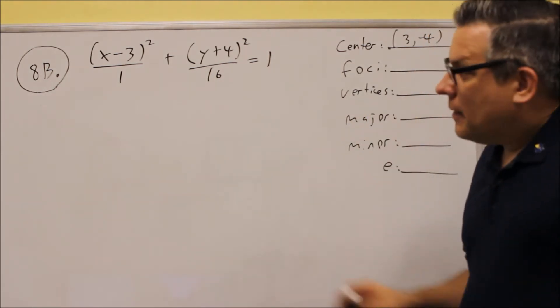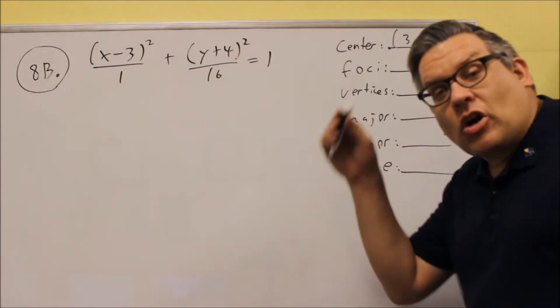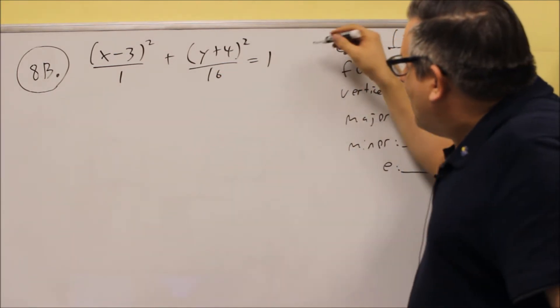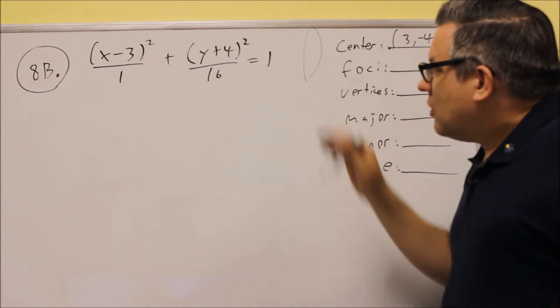Okay, now we have to figure out which way is this going to be oriented, left or right or up and down. We notice that the larger number is underneath the Y. That means we're going to have an ellipse that opens up and down just like that.